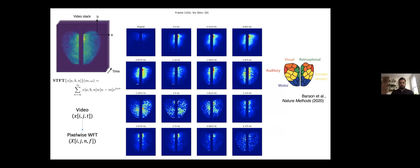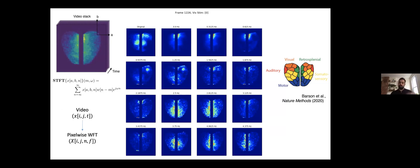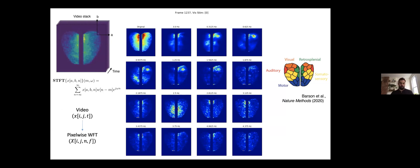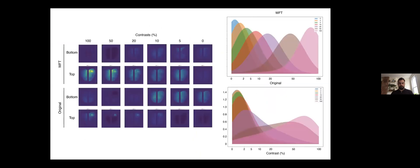The way we do this is we do a windowed Fourier transform to decompose the signal into different frequencies, and then we use convolutional neural networks to identify patterns in that.